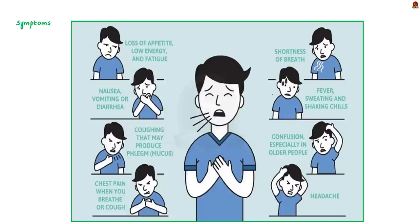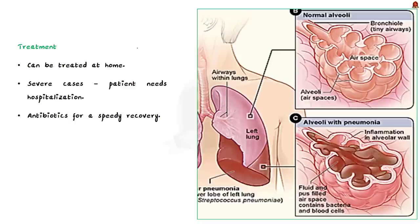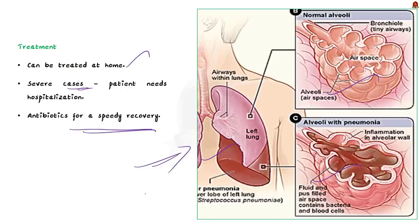The symptoms of pneumonia include rapid or difficult breathing, chest pain, cough, headache, fever, loss of appetite, wheezing, etc. Pneumonia can be treated at home, but in severe cases the patient needs to be hospitalized and antibiotics should be given for a speedy recovery.